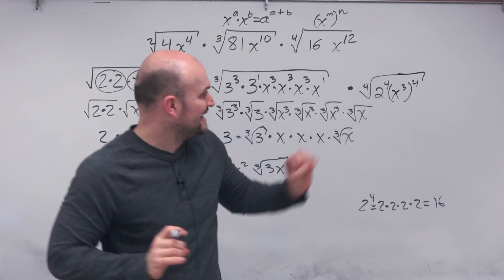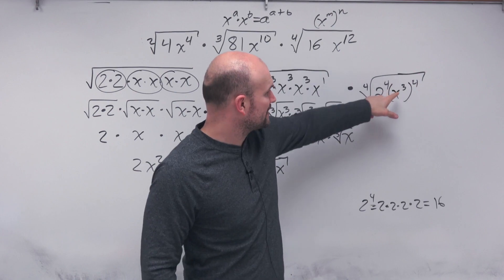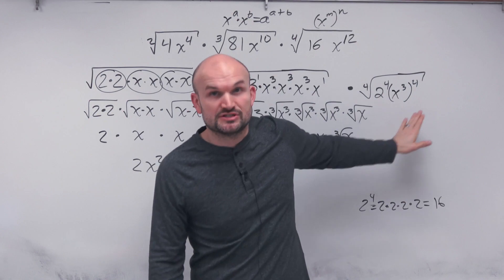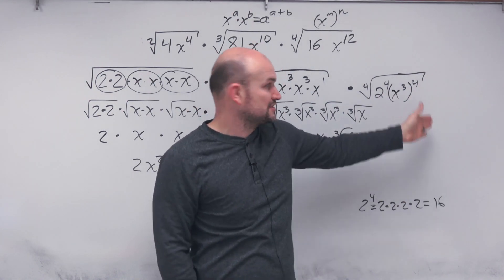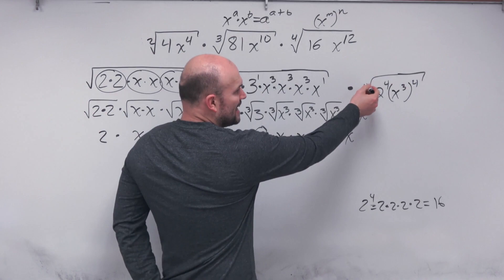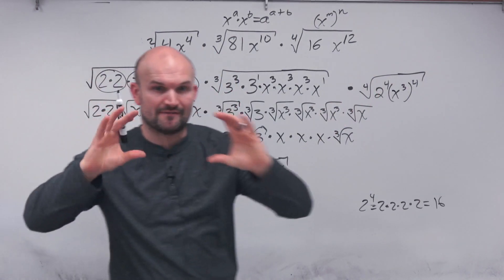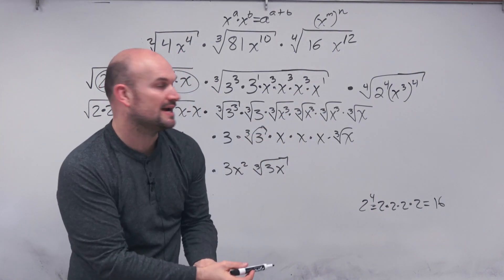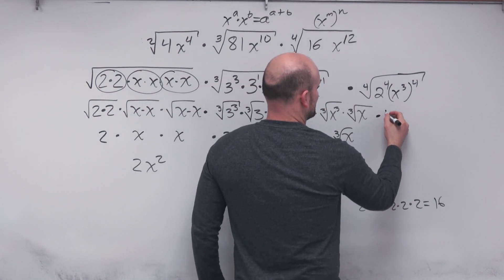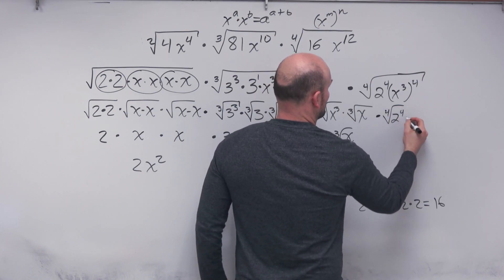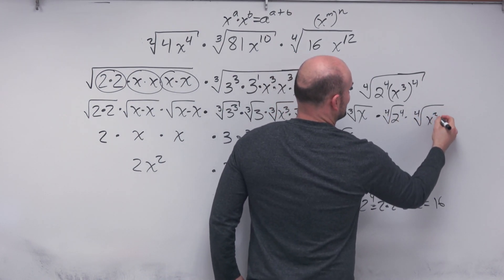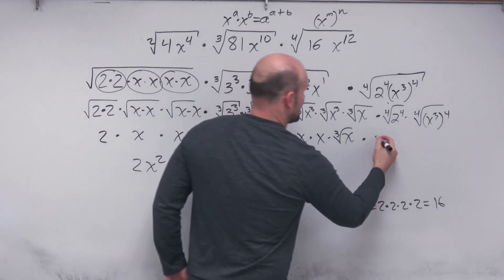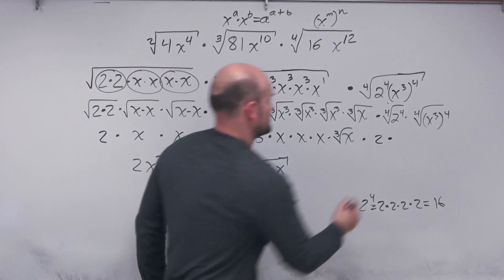You can see how little work I need to do to rewrite this. This is important: when we have our index as 4, we want to make sure we have an expression raised to the fourth power, because that's how we're going to simplify our radical. So this becomes the fourth root of 2 to the fourth power times the fourth root of x cubed to the fourth. The fourth root of 2 to the fourth gives me 2, and the fourth root of x cubed to the fourth gives me x cubed. That simplifies to 2x cubed.